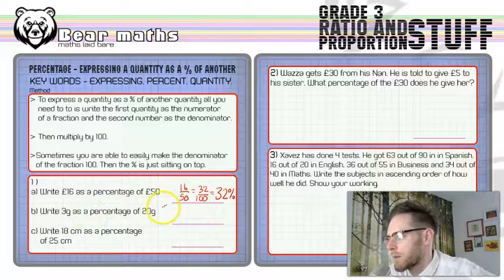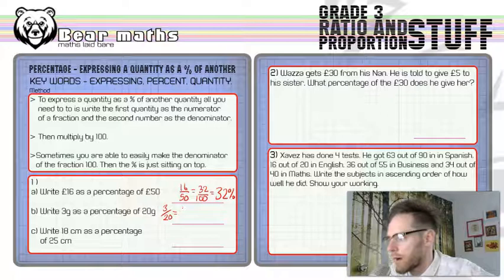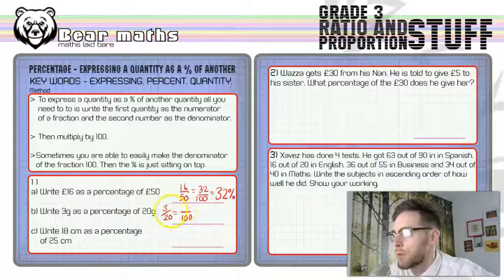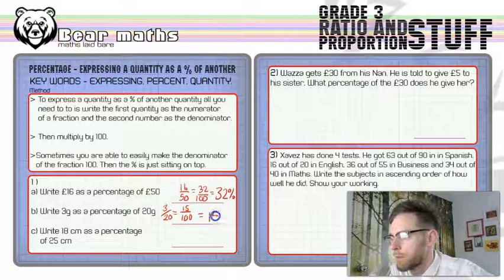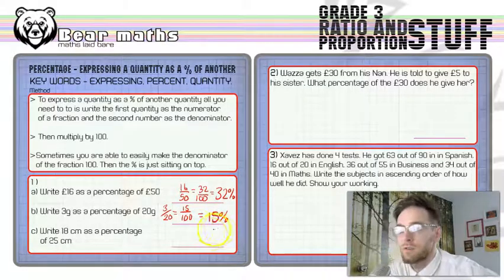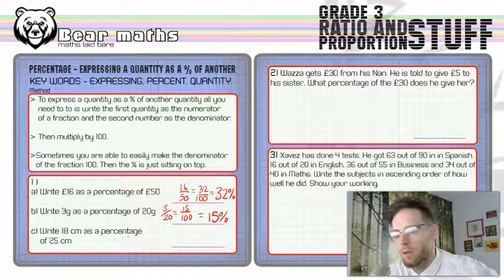So 3 grams as a percentage of 20, same thing. 3 out of 20 can be made into something out of 100. So you multiply by 5 and you multiply by 5, so 15, 15% is what that one will be. It's basically just turning fractions into percentages using that method. There's a video on that in the number section.